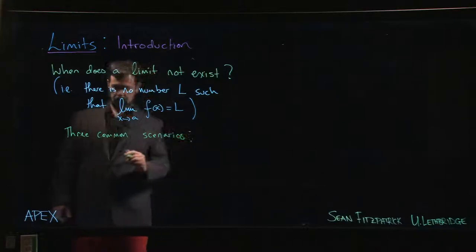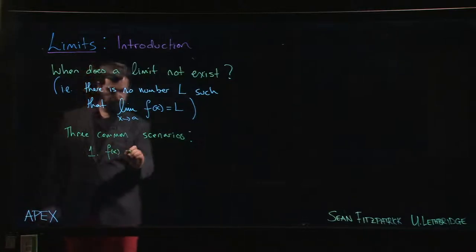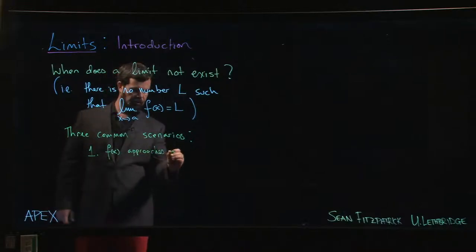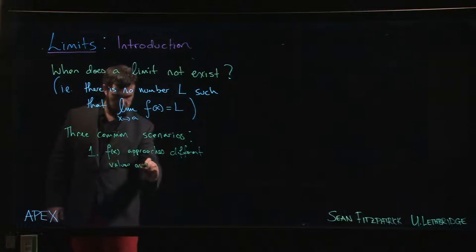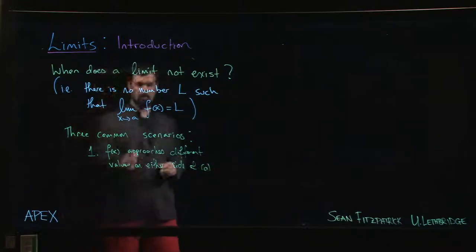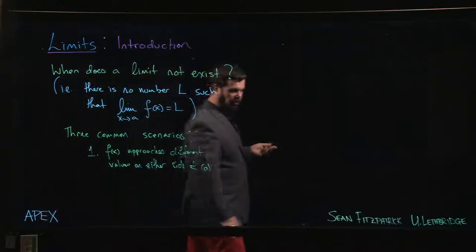The first one is that f(x) approaches different values on either side of this number a. This is sort of like an example we just saw.